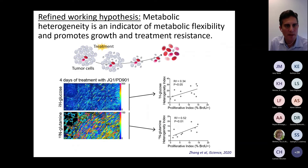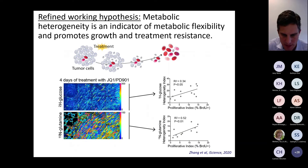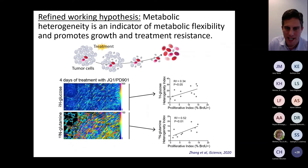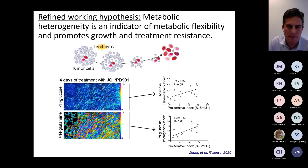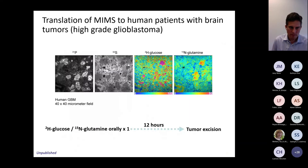With this result we refined our working hypothesis, which is an active area of study: that metabolic heterogeneity is an indicator of metabolic flexibility and promotes growth and treatment resistance. When we plotted all our tumors on an XY graph, the proliferative index—as a function of percent BrdU-positive cells—predicted heterogeneity of both glucose and glutamine metabolism, consistent with this hypothesis.